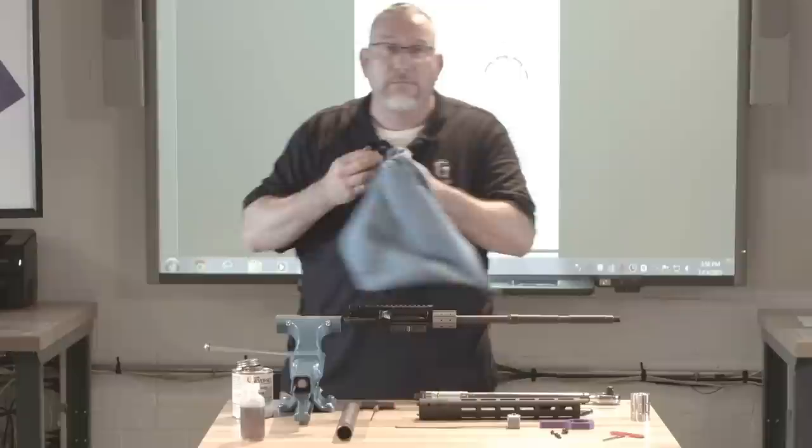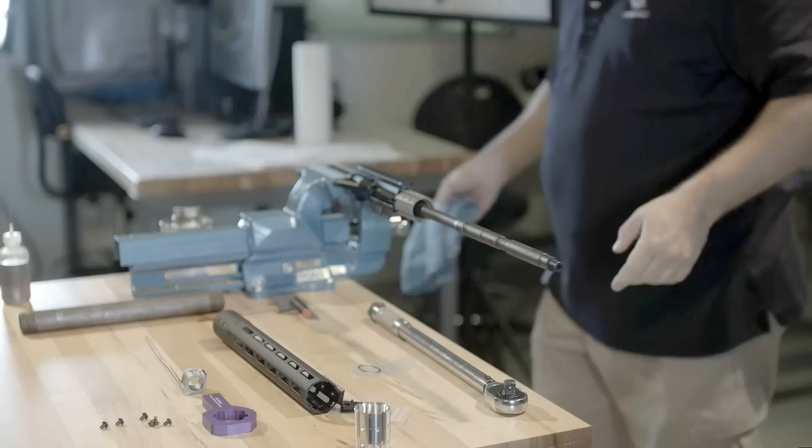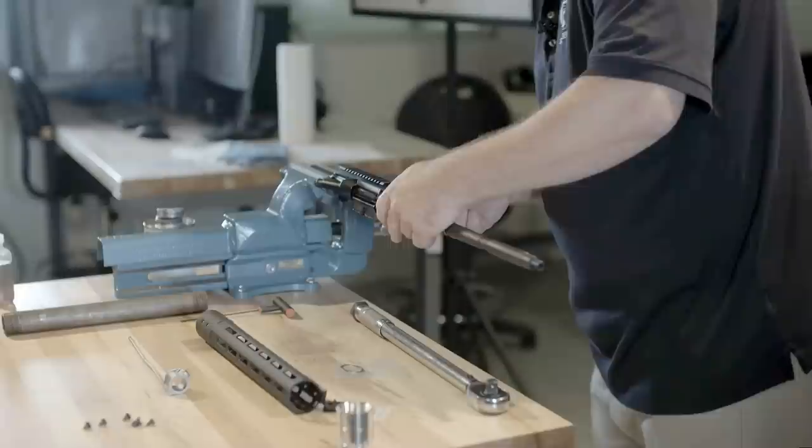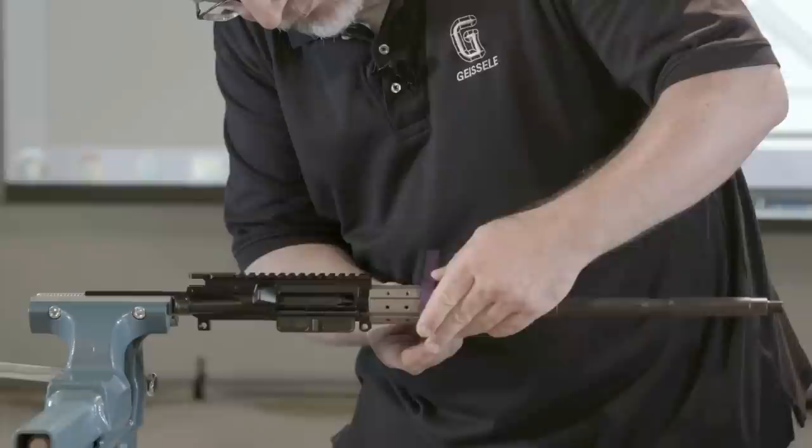Now what you've got to do is you've got to seat your barrel nut into the threads. And why we do this is before we take a measurement on how far to turn the barrel nut. There may be little burrs on things, surface imperfections on the threads. You have to seat this guy. The way you do it is you take your wrench, your purple wrench, you put it on. And it's a nice, tight fit.